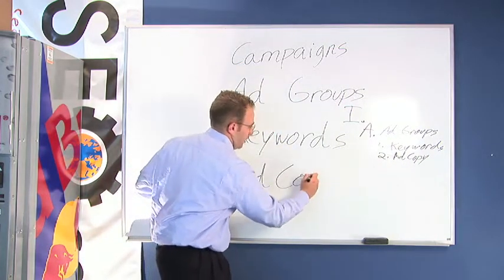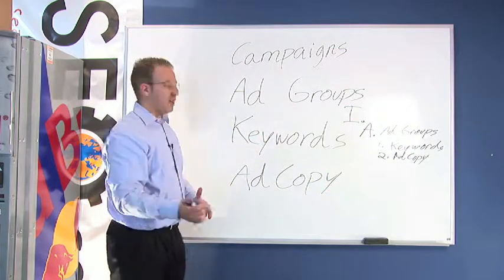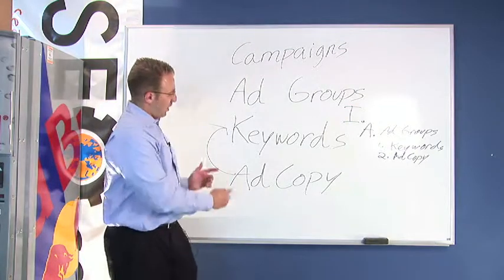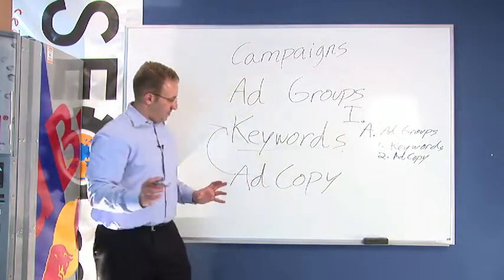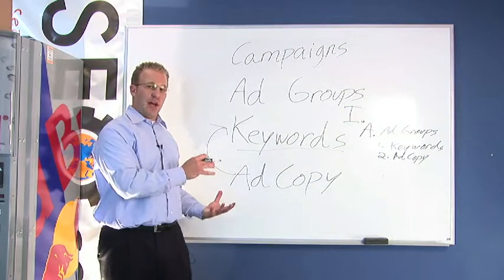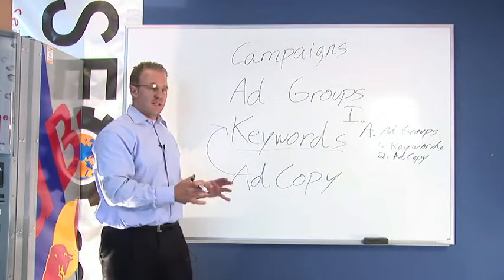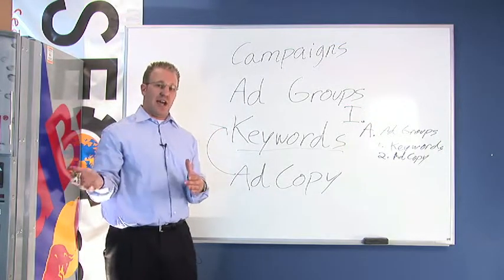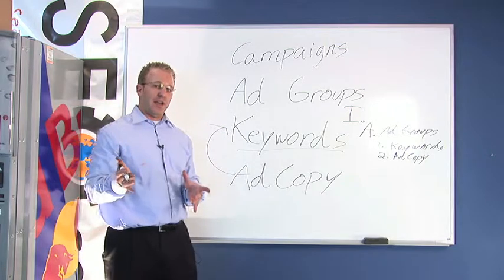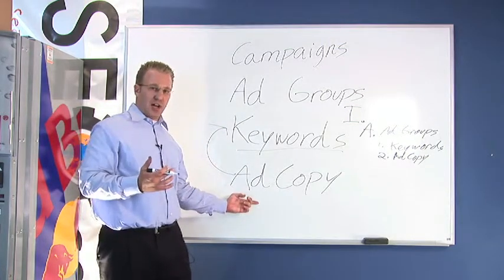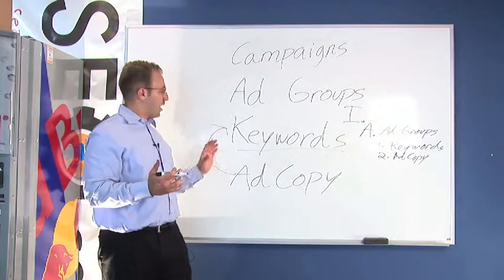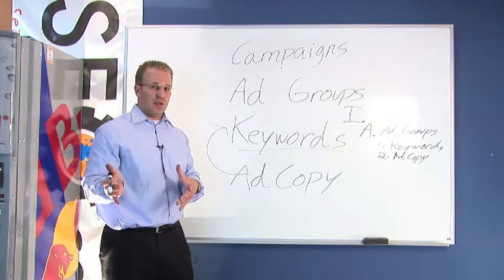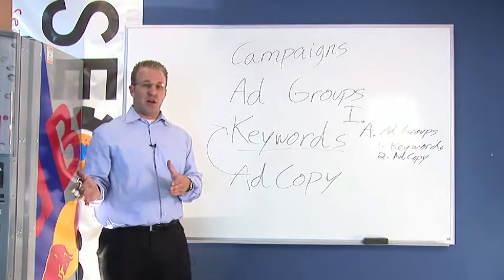The ad copy is going to be how you entice the user into clicking your actual keywords. You want your ad copy to be relevant to the keywords because the search engines actually score how well your ads are performing to see if they should give you impressions. Impressions are the number of times your ad will actually display. The higher amount of clicks you can draw into your ad copy, the more impressions the search engines will allow you for each specific keyword.